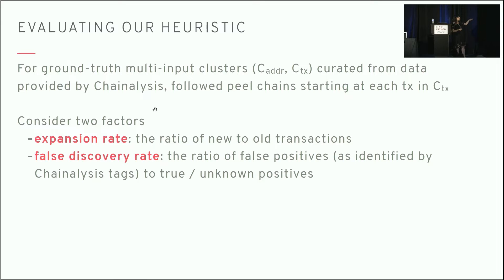What we did is we sought to validate this cluster by following peel chains out of every transaction inside of the cluster. We considered two factors in evaluating these clusters. We considered how effective they are in expanding the cluster in terms of the ratio of new to old transactions. And then how safe they are in terms of the false discovery rate. Notably, we couldn't identify true positives—the best we could do was unknown positives. But we could identify false positives, drawing on data provided by Chainalysis. Essentially, if we encountered in following these peel chains a tag for an address that was in conflict with the tag available for the cluster, then we could say this is a false positive. We're essentially taking Chainalysis' tags as ground truth. That gives us the false discovery rate.